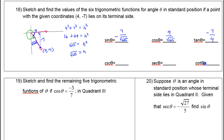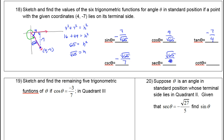Now for the reciprocal trig functions, which are nicely matched up. Cosecant is the reciprocal of sine, so that should be −√65/7. Secant is the reciprocal of cosine, so that's √65/4. And cotangent is the reciprocal of tangent, so that's −4/7.